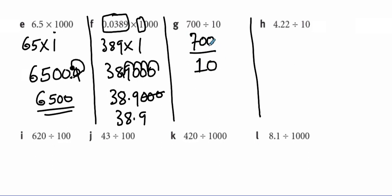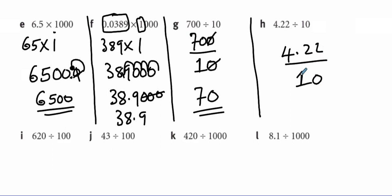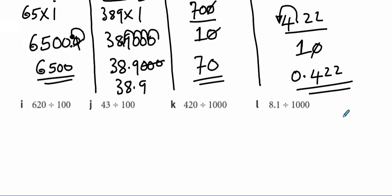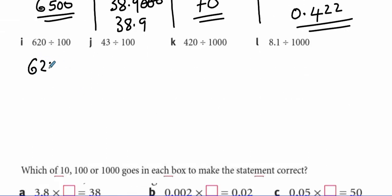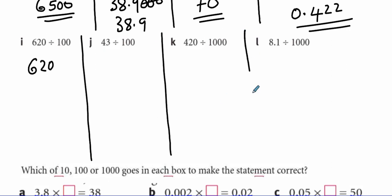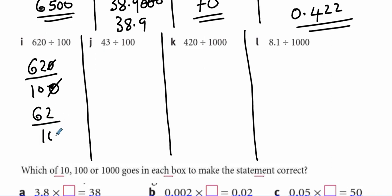700 divided by 10: write that as a fraction, cut this zero, cut this zero — the answer is 70. How about 4.22 divided by 10? Move that decimal point only one step, and the answer will be 0.422. And 620 divided by 100: cut this zero and this zero, you remain with 62 over 10. Count one number from the right and put a decimal point — the answer will be 6.2.